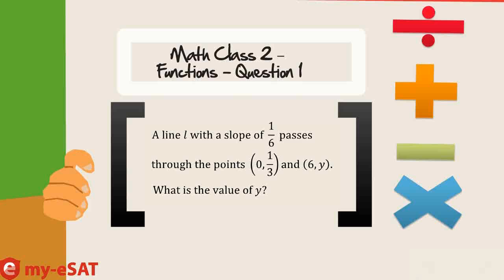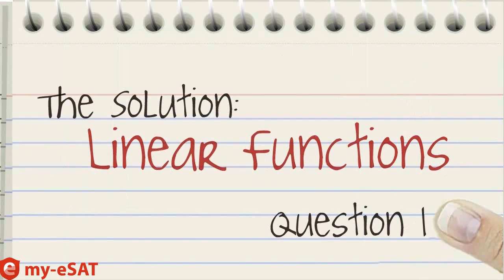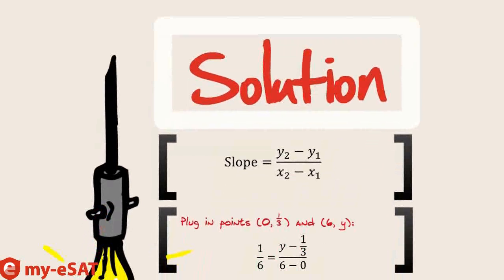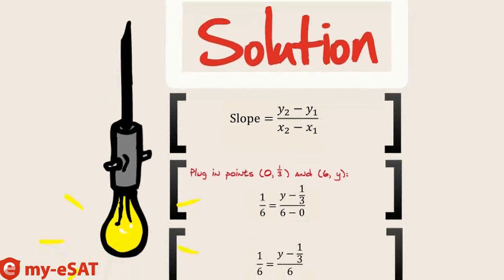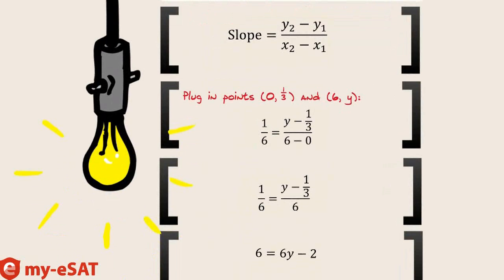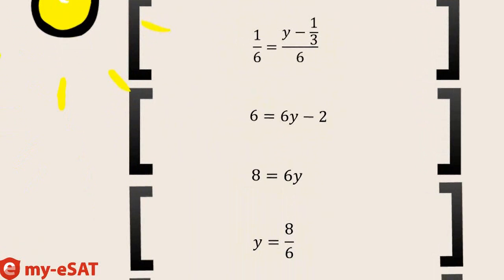So, how'd you do? This question is a classic slope question. As long as you know your slope formula, it shouldn't be too difficult to solve. Remember, our slope formula is slope equals y2 minus y1 over x2 minus x1. Let's plug in the numbers the question gives us. We know the slope is 1/6, y for y2, 1/3 for y1, 6 for x2, and 0 for x1. Now multiply both sides by 6 to get rid of the fraction. You get 6 equals 6y minus 2. Then do the math and get y equals 4 over 3.